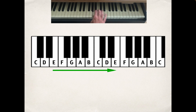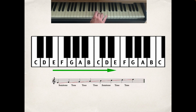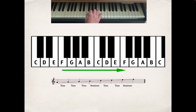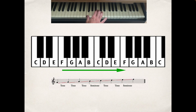Starting on E gives us another mode — that is the Phrygian mode, again with a distinctive sound of its own. Repeating the same process, this time starting on F, gives us quite a unique sound — this is the Lydian mode.